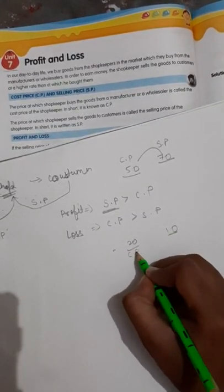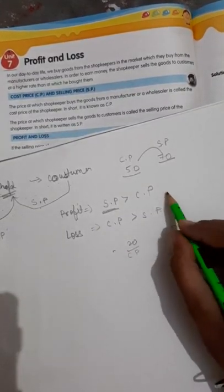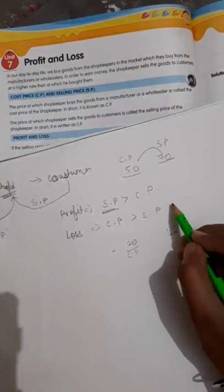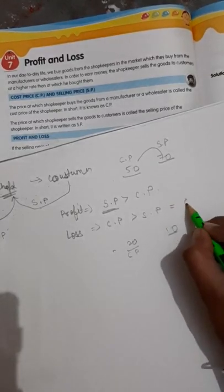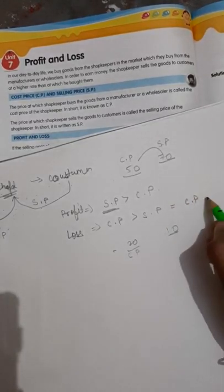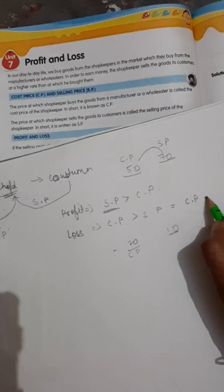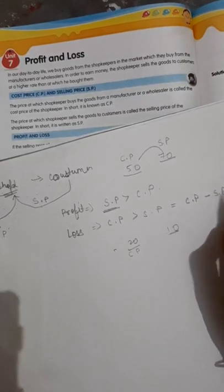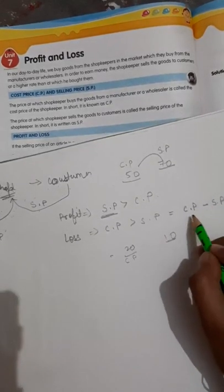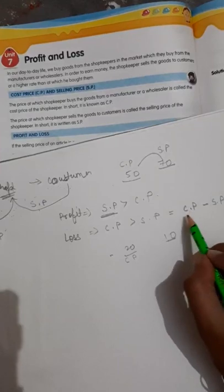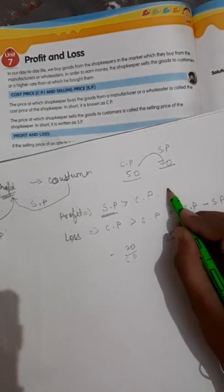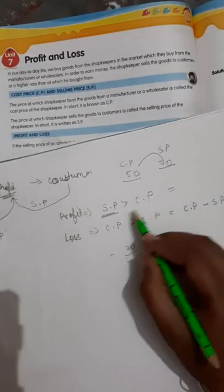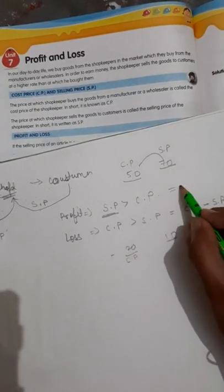Cost price is greater, so what is the formula? In the case of loss, CP will be greater, so you subtract: CP minus SP gives you the loss. Just the opposite for profit — if you subtract CP from SP, then you will get the profit.